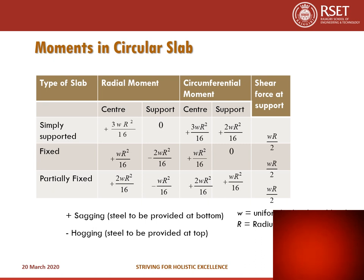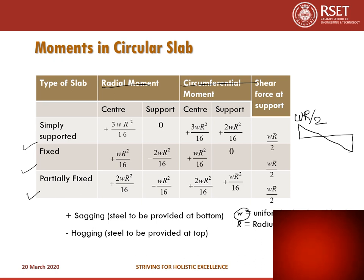To summarize moments in circular slabs: there are two types — radial and circumferential — with different values at center and support for the three slab types: simply supported, fixed, and partially fixed. All maximum values are given in the tabular column. The shear force at the support is always wR/2 for all cases, with the maximum shear force at the support equal to wR/2, where w is the uniformly distributed load.